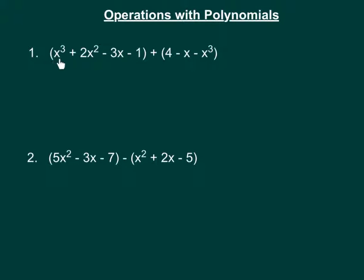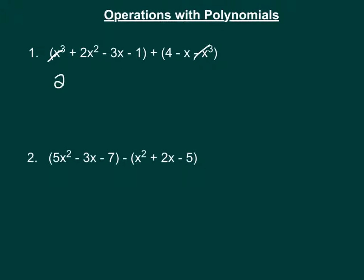Here we have a positive x cubed, and over here we have a negative x cubed. A positive and negative of the same thing are just going to cancel off with each other. Now we have a 2x squared, and as you look across, there's no other x squared term, so since there's nothing to combine it with, let's just bring down the 2x squared.